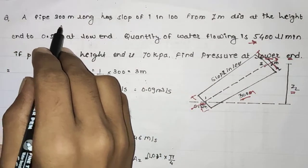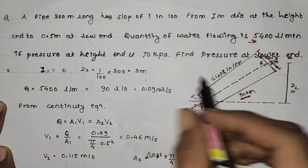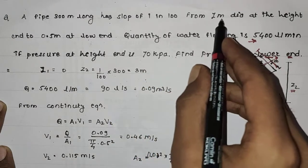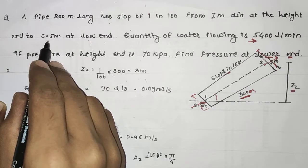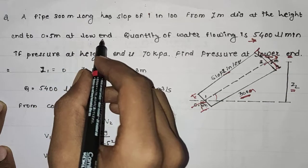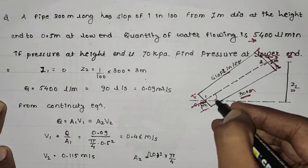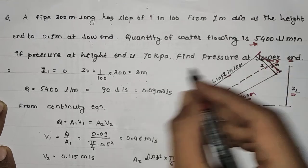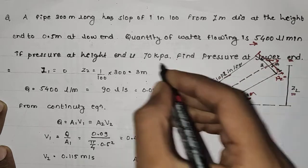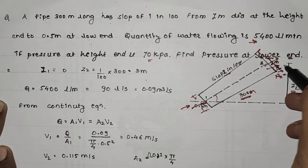The problem: a pipe is 300 meters long with a slope of 1 in 100, having a diameter of 1 meter at the upper (height) end and 0.5 meter at the lower end. The quantity of water flowing is 5400 liters per minute. The pressure at the upper end, P2, is given as 700 kilo-Pascals. Find the pressure at the lower end — that is, how much pressure is required to push the flow to the upper surface.